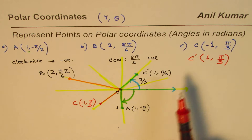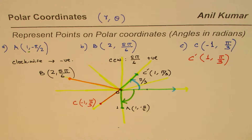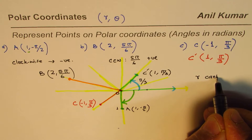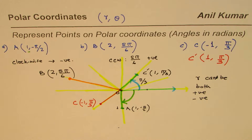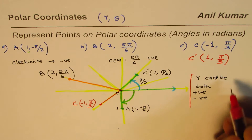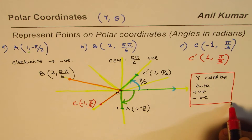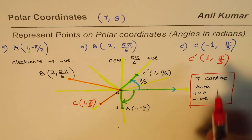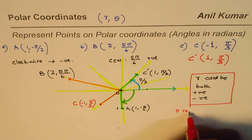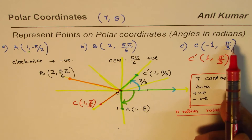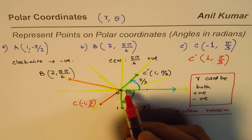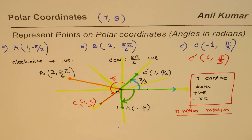The key concept here is that r can be both positive and negative in polar coordinates. To plot a negative r value, you reflect the point through the pole, which is equivalent to a rotation of π radians (180 degrees) from the positive r position. So from the positive point, rotating π radians gives you the negative r point.